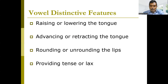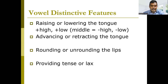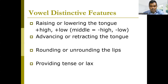By raising or lowering our tongue, we have two features: high and low — positive high and positive low. Even though in the cardinal vowel system vowels are divided into three parts — high, middle, and low — for distinctive features there is no positive middle. The middle position is represented by negative high and negative low. We use these two features together to show the middle position of a sound.